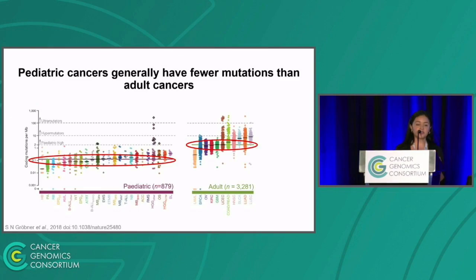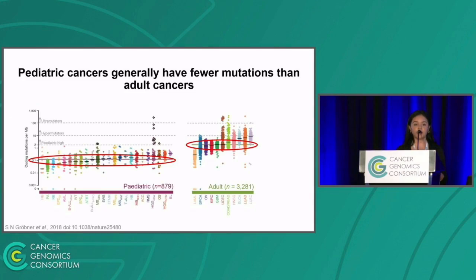Pediatric cancers are instead regarded as epigenetic diseases, where we often see defects in epigenetic machinery and also global reprogramming of gene expression. It's clear that for pediatric cancers, we need to look beyond mutations, and the Vasquez lab believes that looking at RNA instead, we may be able to identify transcriptional programs that are driving a patient's tumor and can possibly be targeted for treatment.